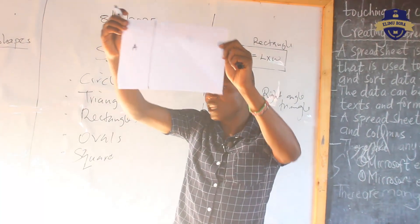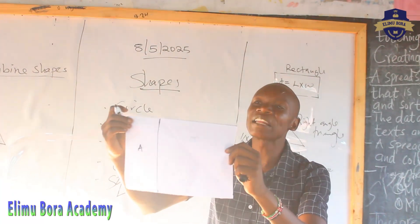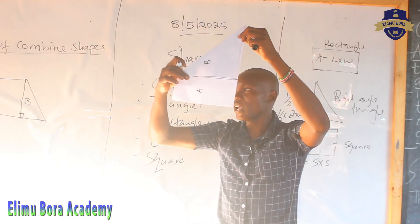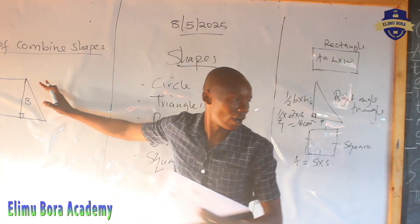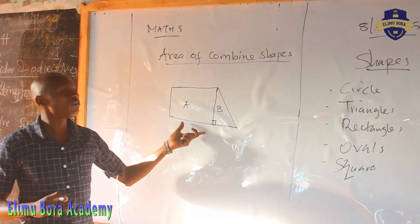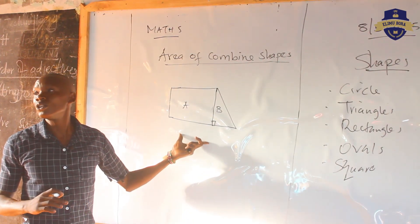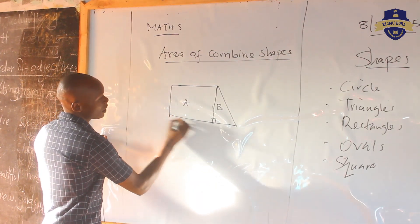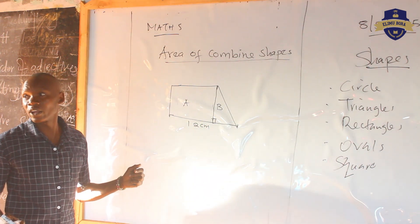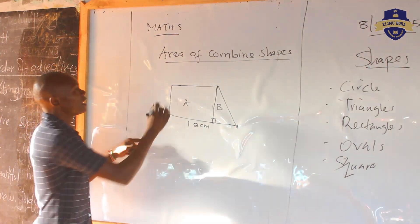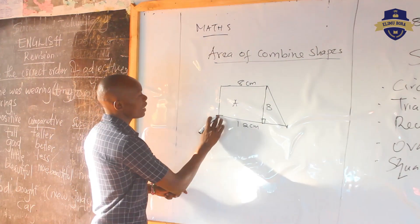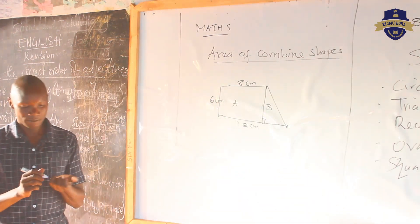This paper is a rectangle. If you now fold it, it comes up with two shapes. Now, when you are given to find area of a combined shape, area of any shape that you are given, you give your answer in square units. Let us assume that from here to here is 12 centimeters, from here to here is 8 centimeters, and from here to here is 6 centimeters.